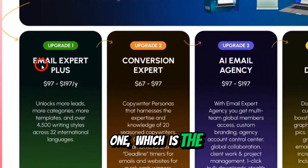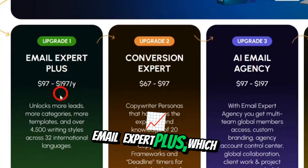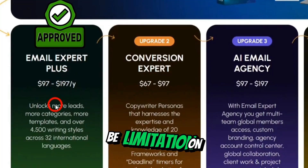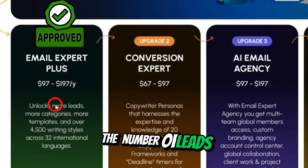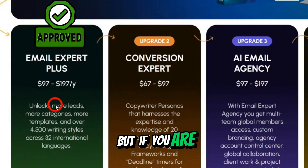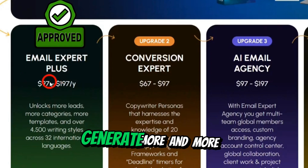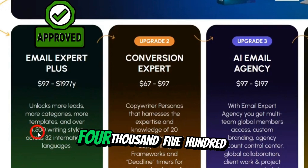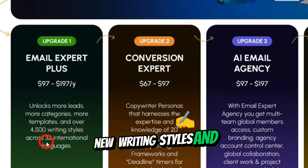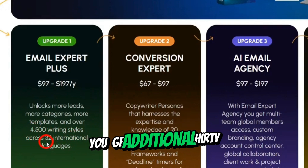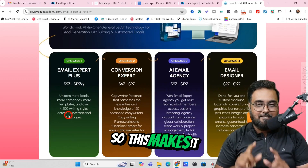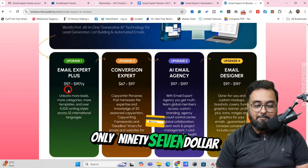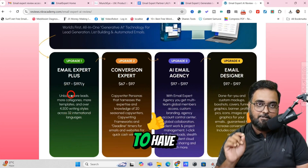Then there's OTO one, which is Email Expert Plus, which actually helps you to unlock more leads — because on the front end, there is a limitation on the number of leads you can generate. But with this upgrade, you can go ahead and generate more and more leads. You also unlock 4,500 new writing styles and get an additional 32 languages. So this makes it a recommended upgrade at only $97.